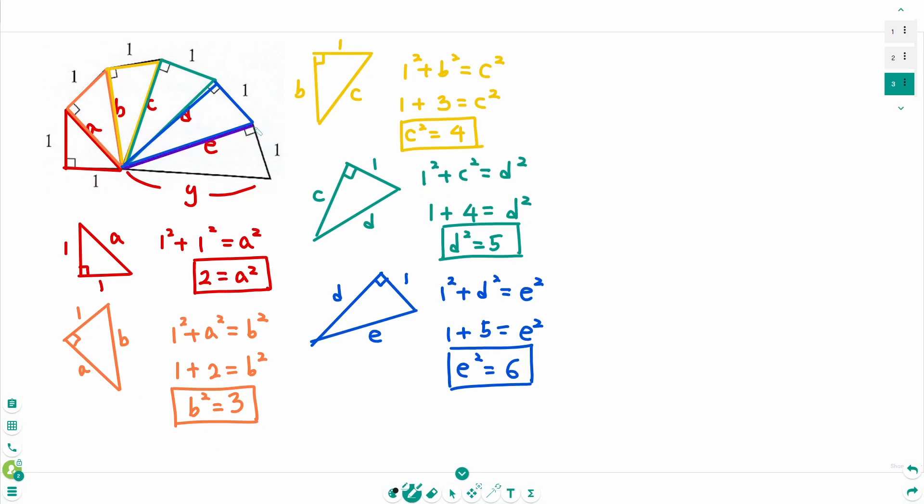Finally, the last one. Then E squared plus 1 squared equals Y squared. Then E squared, which is 6, plus 1 equals Y squared. Then Y squared equals 7.